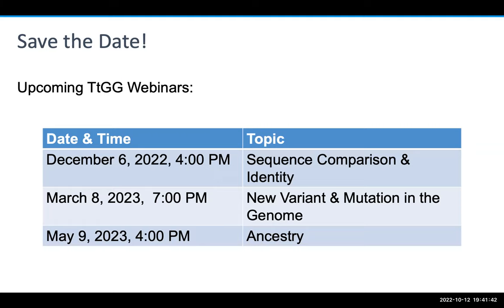We have three more webinars coming throughout this school year. Our team has been working hard on all these new content modules, and in the coming months we will debut three similar modules, each with the same focus on data literacy and math skills. In December, we have the sequence comparison and identity module. In March, new variant and mutations in the genome. And in May, the ancestry testing module. Save the dates — we'll send out emails, share the links, and hope that you can attend.